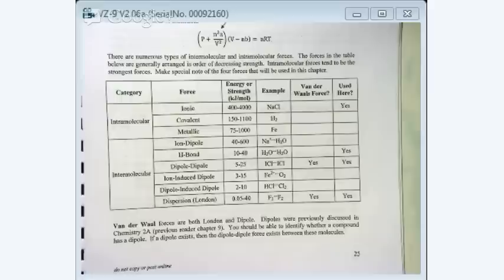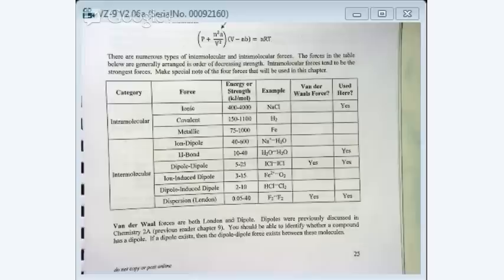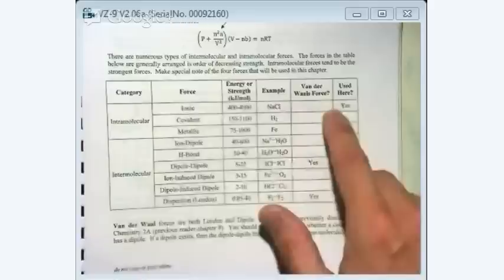You've heard those before — same as Chem 2A. This column represents the strength. The energy is strongest for ionic generally, then covalent is the next strongest, and metallic is generally the weakest. The one you'll see most in this chapter is ionic, which will pop in every once in a while.